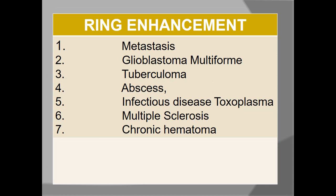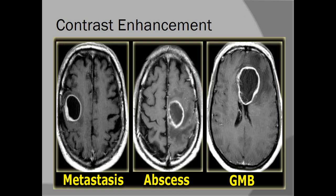Ring enhancement can be seen on contrast MRI. When we give contrast to the patient and find a ring-enhancing lesion, the differentials include: most commonly metastases, then glioblastoma, tuberculoma, abscess, infectious diseases like toxoplasmosis, multiple sclerosis, and chronic hematomas. As you can see here, the commonest ring-enhancing lesions are metastases, GBM, and abscess.